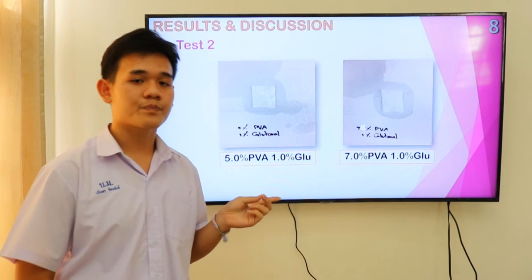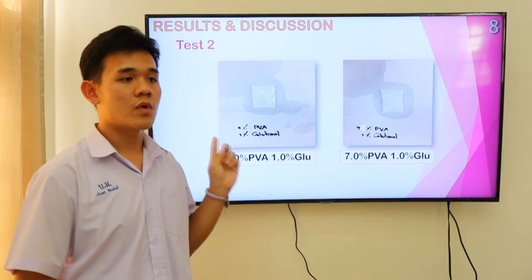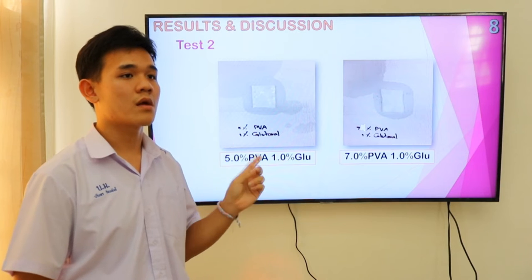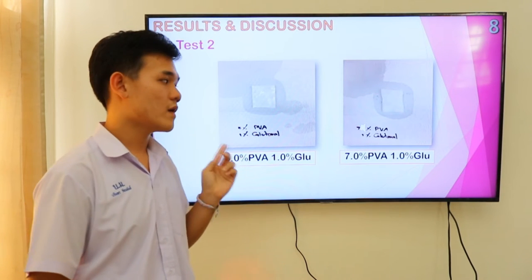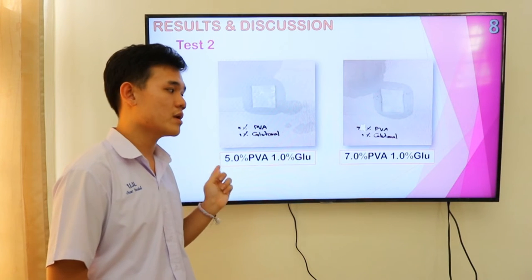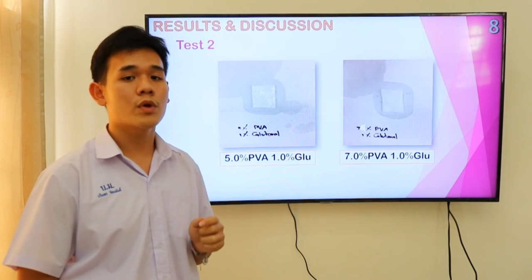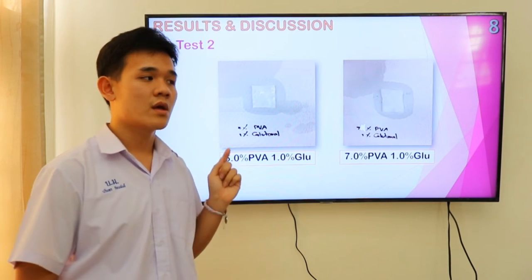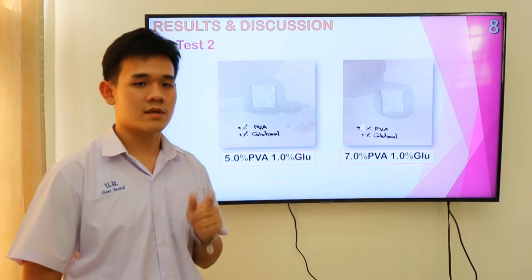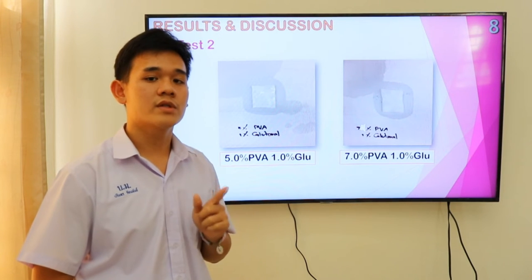From the results of the experiment, it was found that the membrane has high porosity and more stiffness. However, if I increase the concentration of polyvinyl alcohol to 7%, it was found that the membrane has less flexibility and is more brittle.